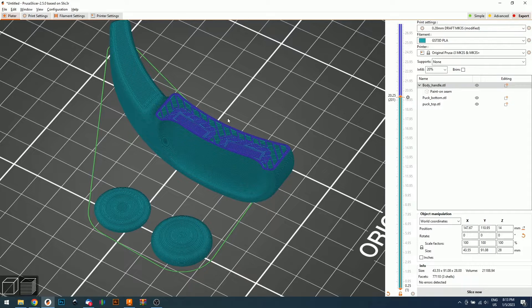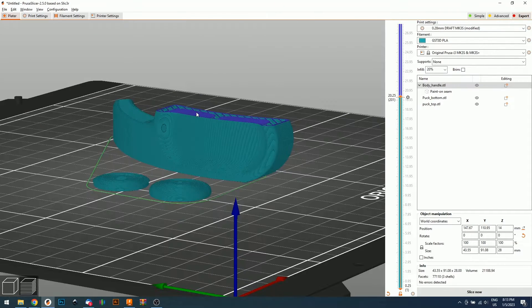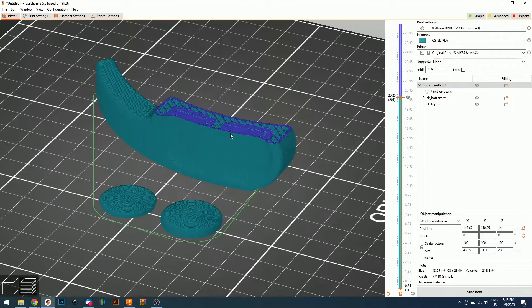Another thing you need to consider is that you need to use 0.2 layer height for the body. Let's call it the body. And 0.1 for the packs. Otherwise, this won't work.